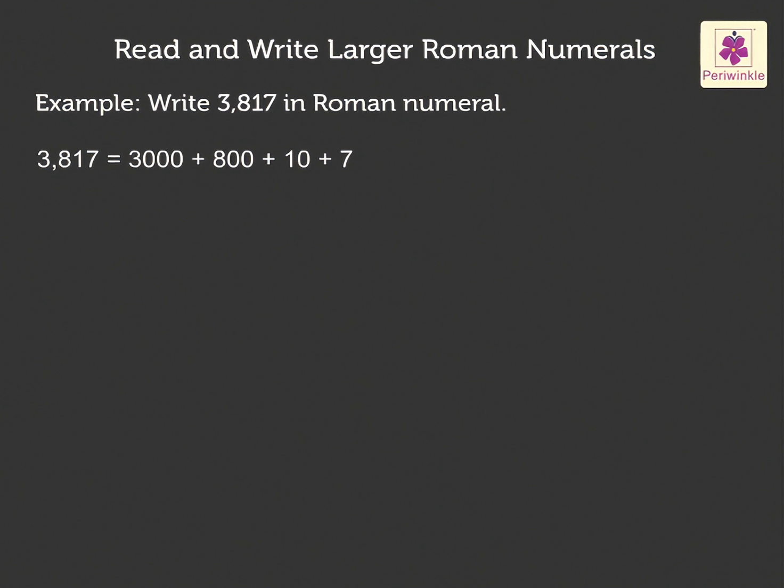We first write the number 3817 in expanded notation as 3000 plus 800 plus 10 plus 7. Now, write the Roman numeral values of each. That is, 3000 as MMM, 800 as DCCC, 10 as X and 7 as VII which is equal to MMMDCCCXVII.